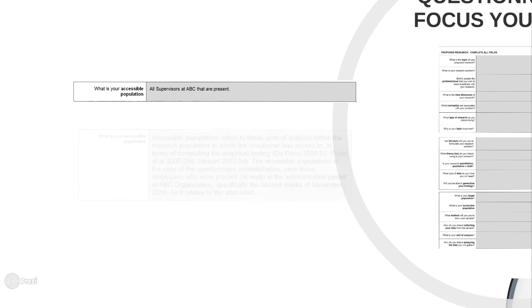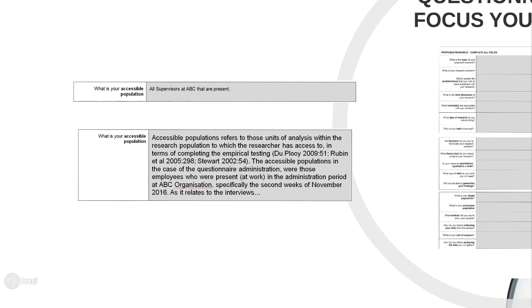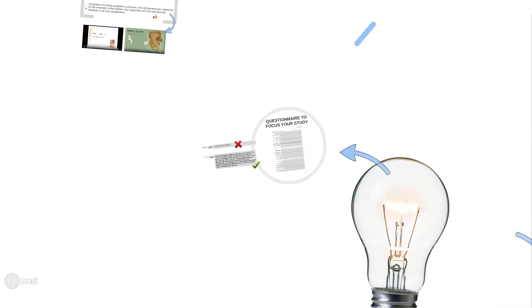The second aspect: do not think that because this is a questionnaire, you can answer it in telegram style. You will still have to treat the answer like an academic response. First give a little explanation of what the questionnaire aspect is asking about, and then elaborate on how it comes into play in your research specifically. No telegram style — really discuss the aspects in the questionnaire like you would any other academic text.